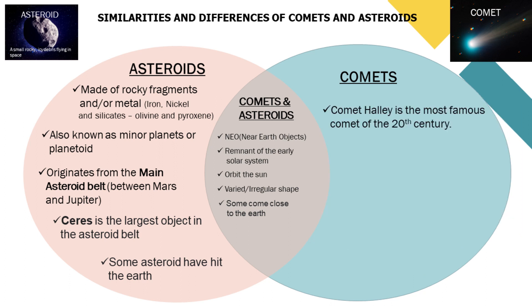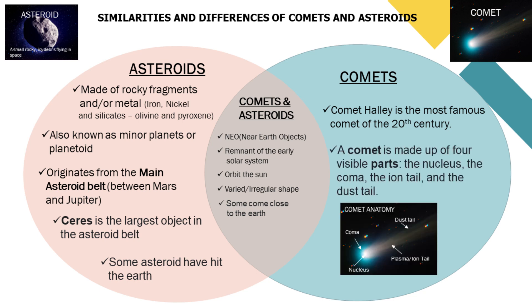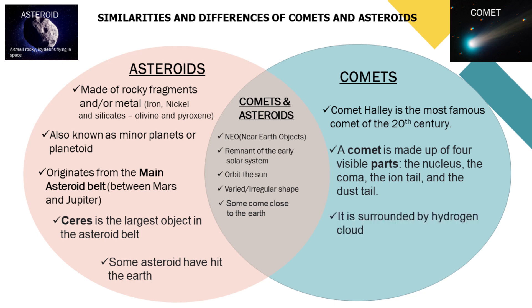Comet Halley is the most famous comet of the 20th century. A comet is made of four visible parts: the nucleus, the coma, the ion tail, and the dust tail. The nucleus of the comet is surrounded by a cloud of hydrogen called the coma.